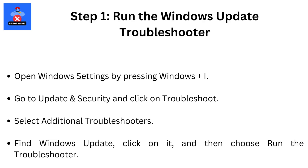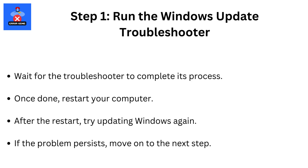Step 1: Run the Windows Update Troubleshooter. Open Windows Settings by pressing Windows + I. Go to Update and Security and click on Troubleshoot. Select Additional Troubleshooters. Find Windows Update, click on it, and then choose Run the Troubleshooter. Wait for the troubleshooter to complete its process. Once done, restart your computer.